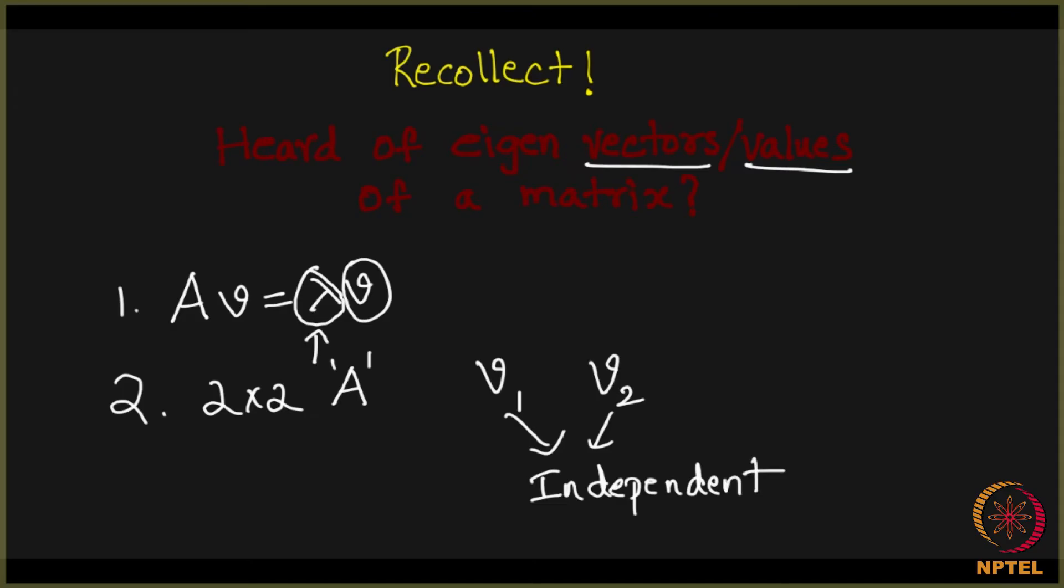What do I mean by that? By that I mean you take any vector, any vector of your choice, let's say any vector Z, you can always write Z as a linear combination of alpha V1 plus beta V2. Because they are what is called linearly independent, you can always write any vector as a linear combination of V1 and V2. If you do not know these things, you probably should brush up your basics.